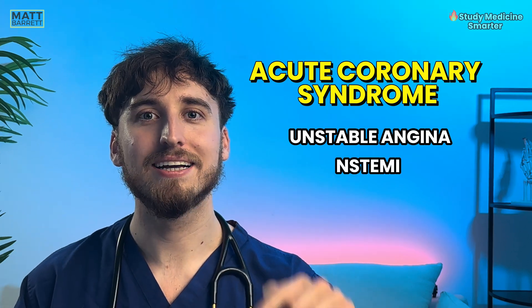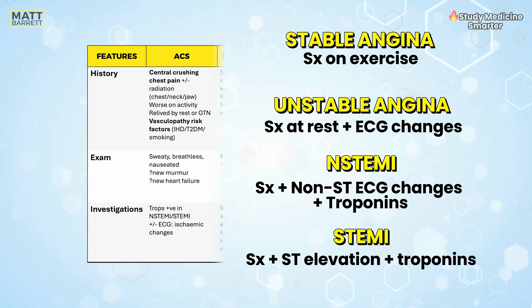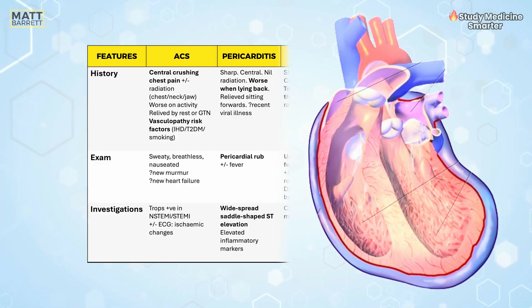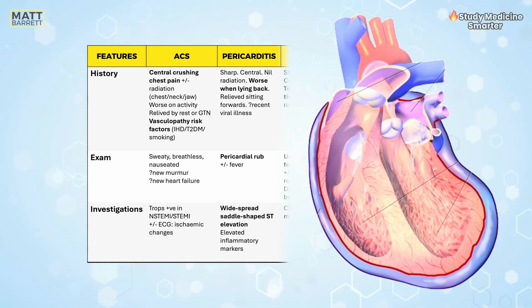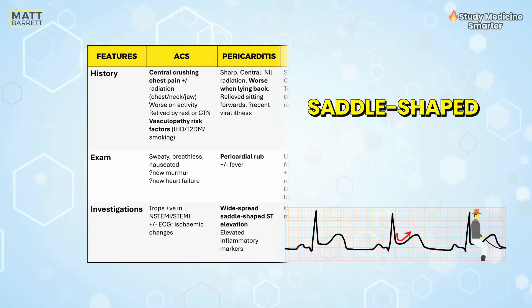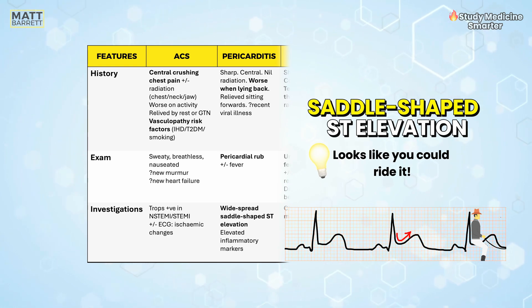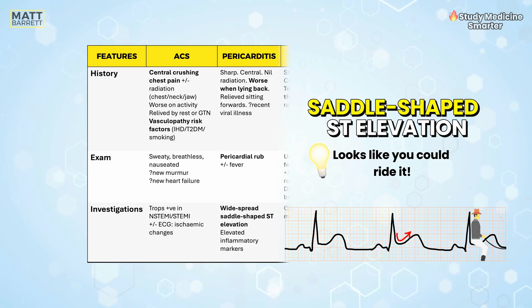Acute coronary syndrome is a family of three different conditions: unstable angina, NSTEMI and STEMI, and we differentiate that depending on ECG findings such as ST elevation or ischaemic changes and the presence of raised troponins. Pericarditis is inflammation of the pericardium, the sac that surrounds the heart. The pain tends to be pleuritic — sharp and worse on breathing in — and you may be able to quite specifically localise it to a point in the chest. Pericarditis is classically worse on leaning back, and ECG may show widespread saddle-shaped ST elevation. On examination you may hear a pericardial rub, which you can differentiate from a pleural rub by asking the patient to hold their breath.